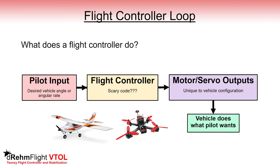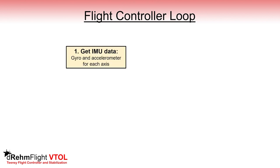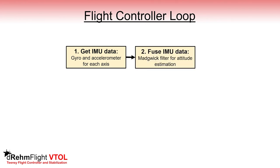This allows the pilot to command a desired angle or angular rate and the vehicle will perform that command. So let's take a quick look at the processes required within a flight controller loop to stabilize an unstable vehicle. The first thing that needs to happen in the code is to retrieve the IMU data. The IMU will give measurements of the vehicle rotation rates and acceleration in each axis. This data must be combined in order to accurately estimate the absolute orientation or body angles in space. DreamFlight uses an algorithm known as the Madgwick filter to achieve this, giving roll, pitch, and yaw angles of the flight controller.